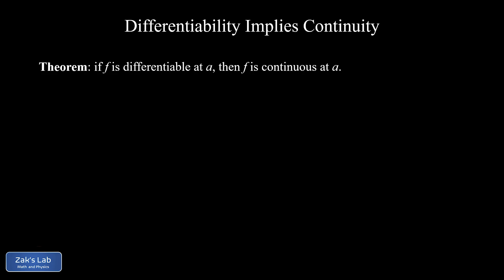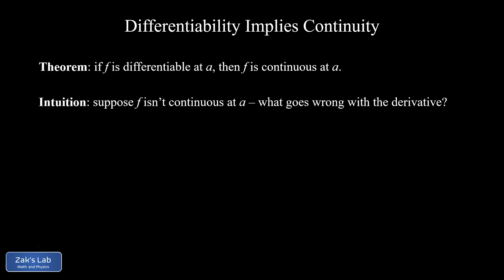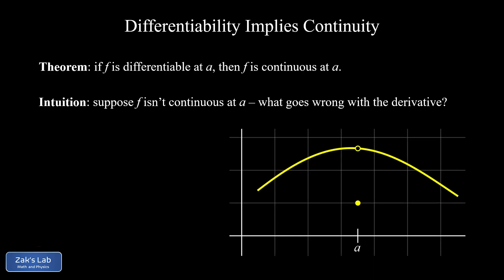To get some intuition for what's going on geometrically, we're going to think about the contrapositive statement to this theorem. The contrapositive statement is that if f is not continuous at a, then f is not differentiable at a. So the question is: what goes wrong with the derivative if I'm looking at a discontinuous function? Here's a simple function with a removable discontinuity at x equals a.